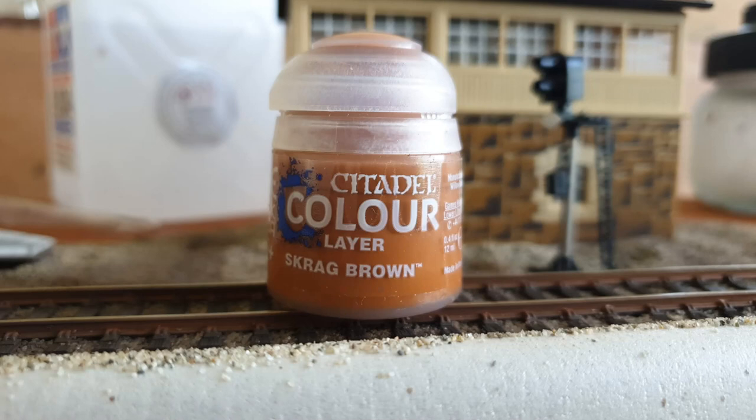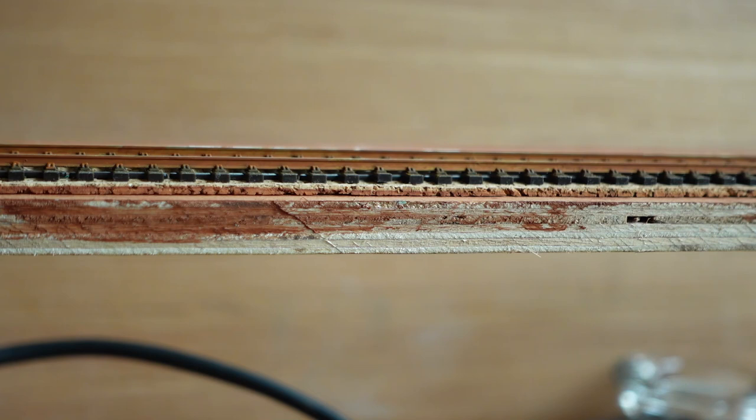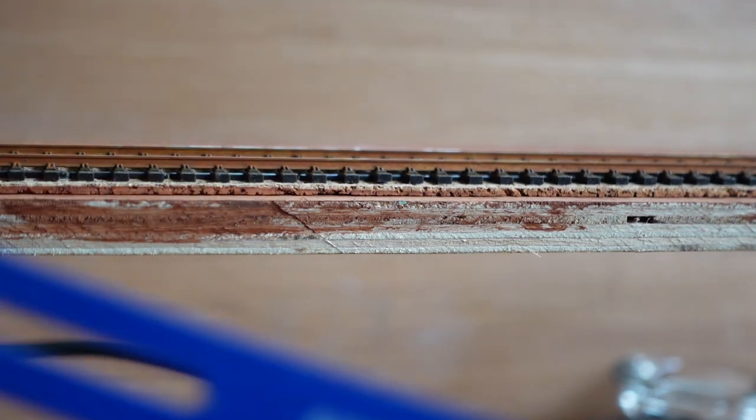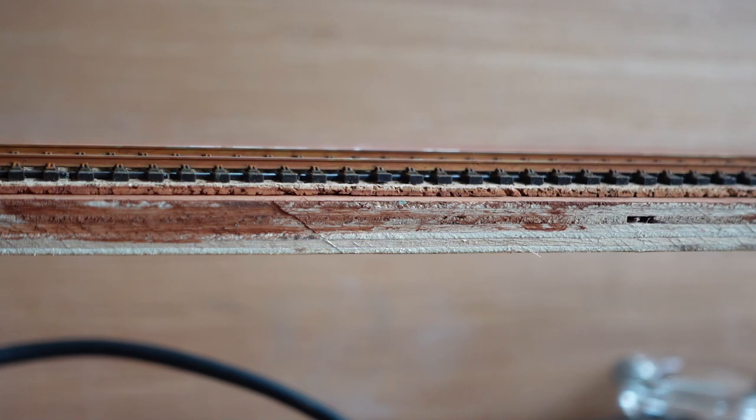I grabbed a pot of paint. That is Skyrag Brown, close enough to rust. The guys in the shop were actually very helpful. If you need any information on painting models, they're usually very good in there because they do a lot of painting for their Warhammer hobby. I picked up a small brush and used that to paint the rails, and it came out quite effective. Before I start the ballasting, I'm going to clean the rails using my track rubber, then run my track setter down just to make sure it's all perfectly straight. Once you put the ballast and the glue in, it's going to set everything in place. Then I'll give it a vacuum and start the ballasting.